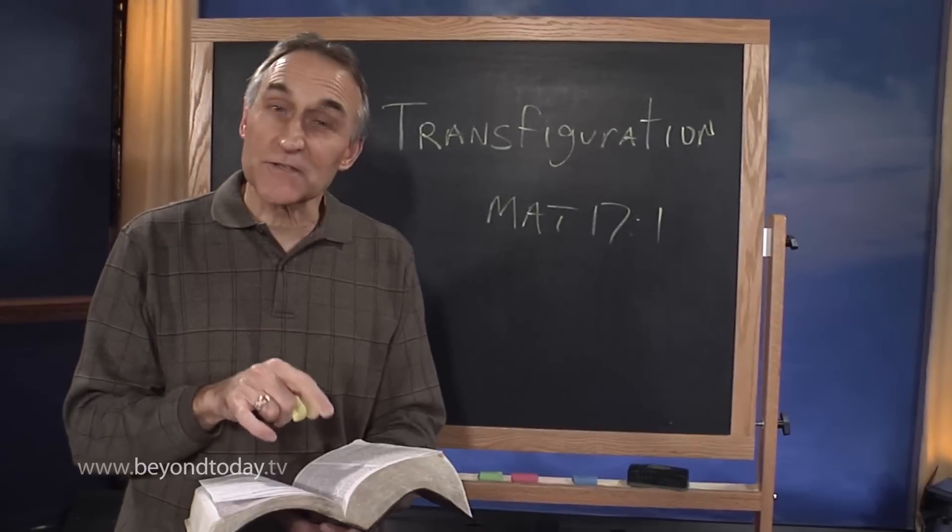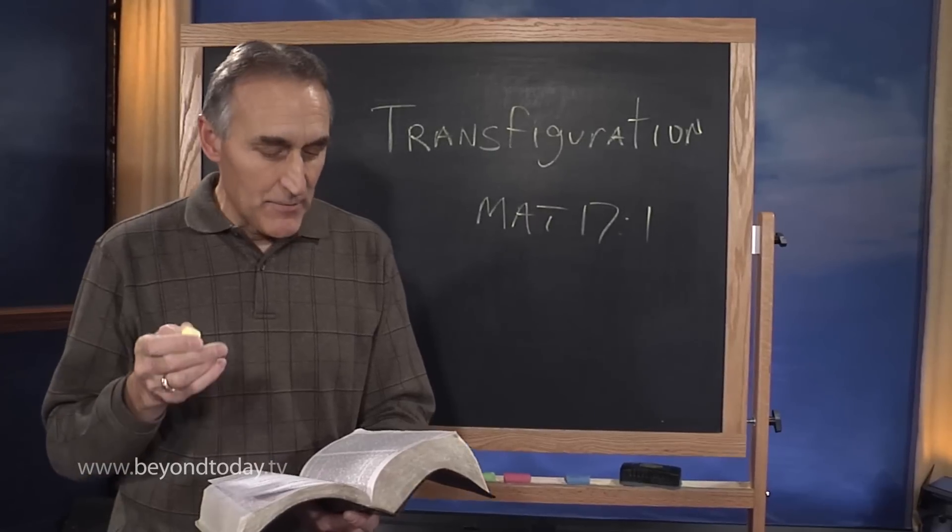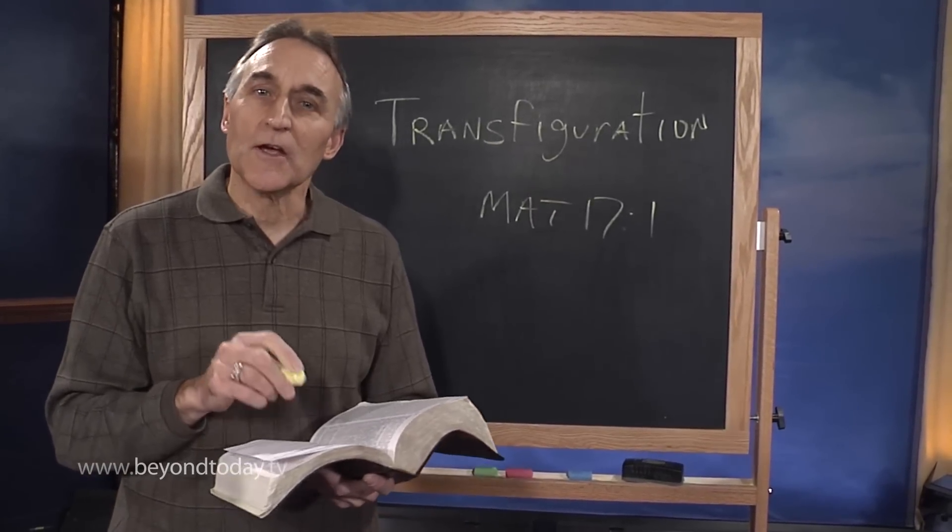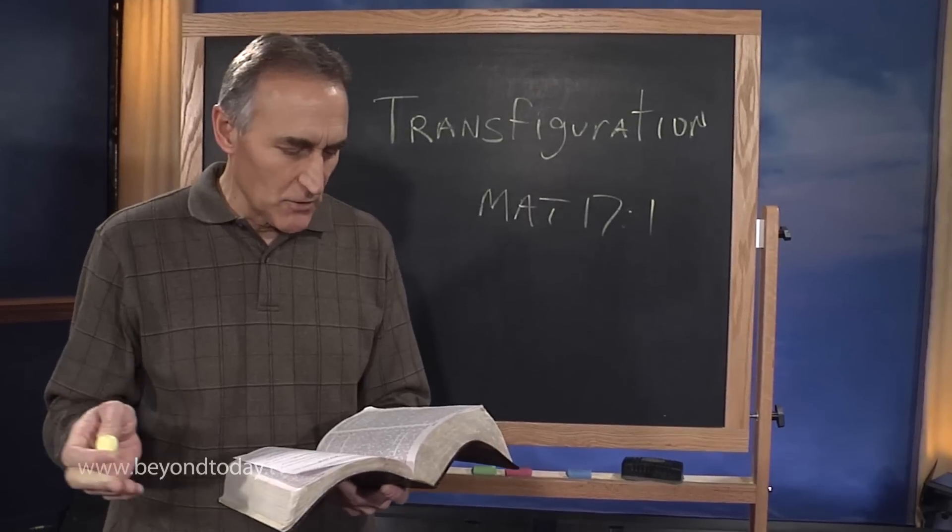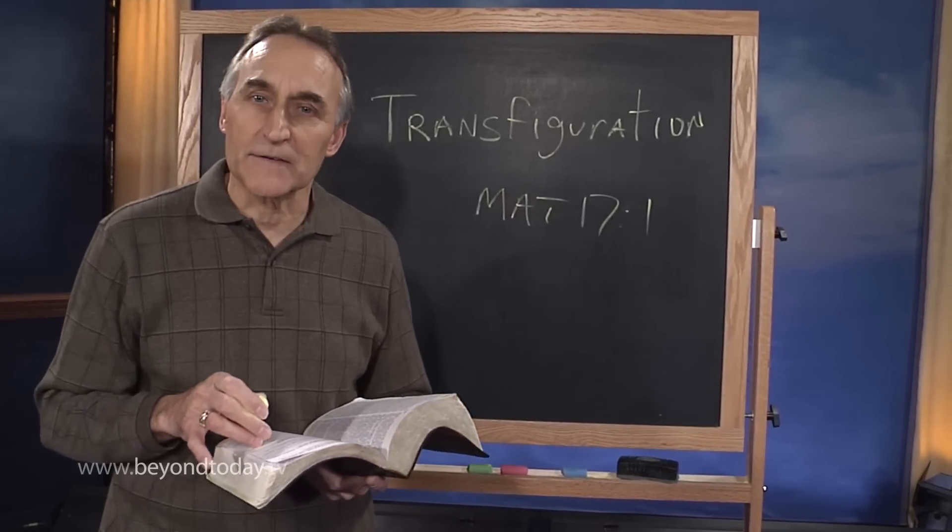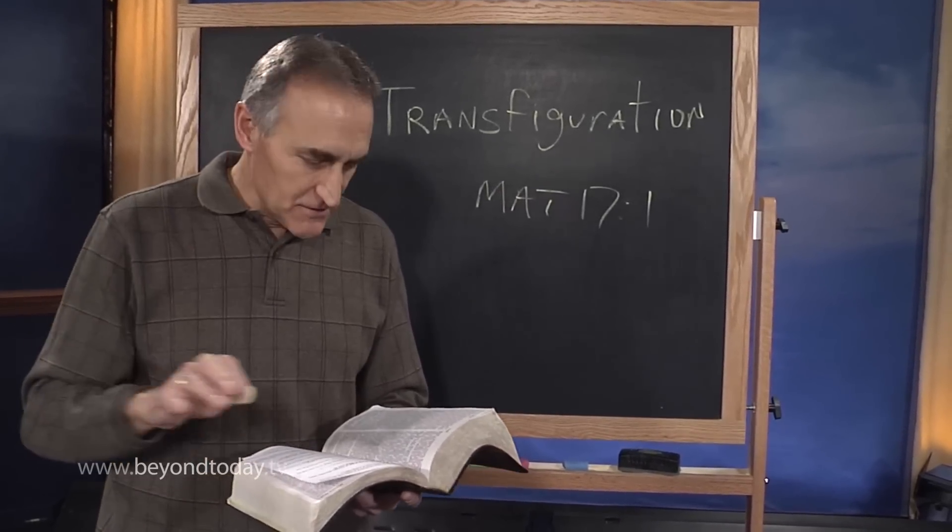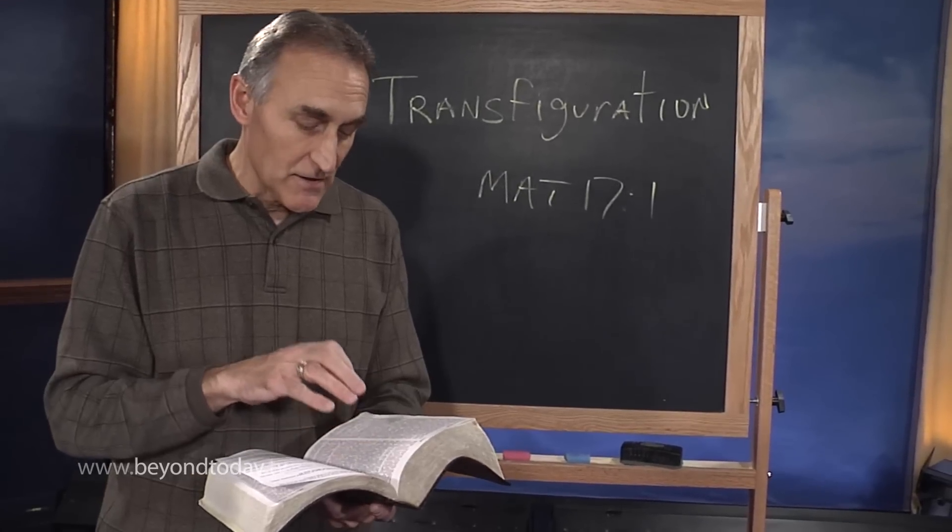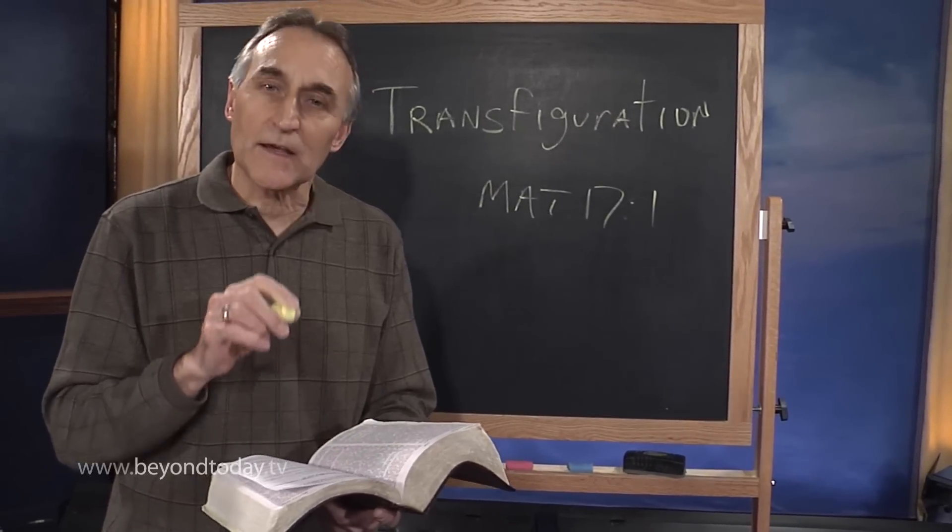After six days Jesus took Peter, James and John, His brother, led them up on a high mountain by themselves, and He was transfigured before them. His face shone like the sun, His clothes became white as light. Now in this vision, Christ wasn't alone. It says, And behold, Moses and Elijah appeared to them, talking with Him.